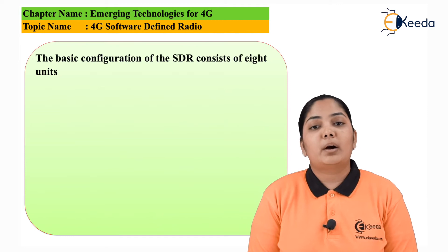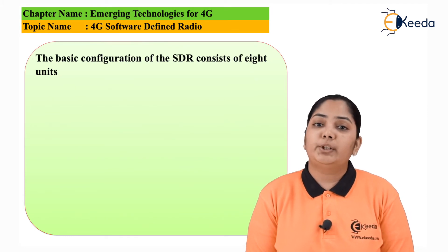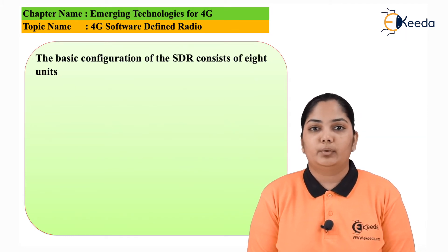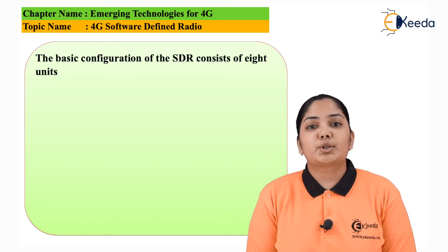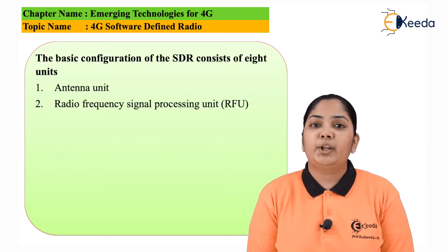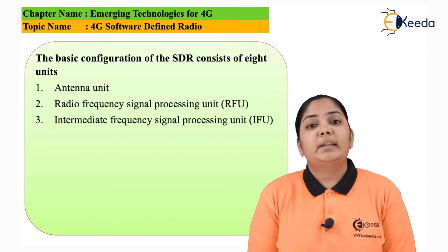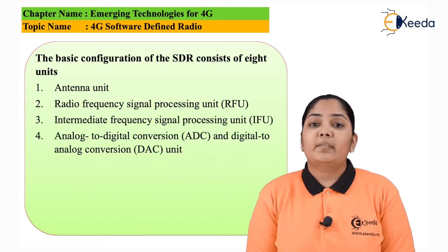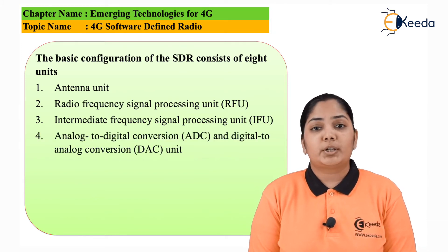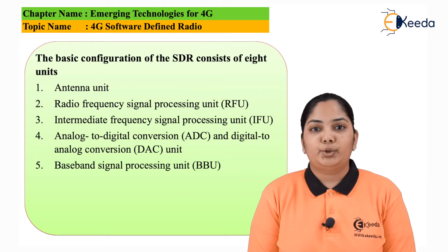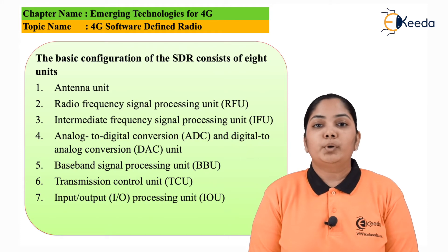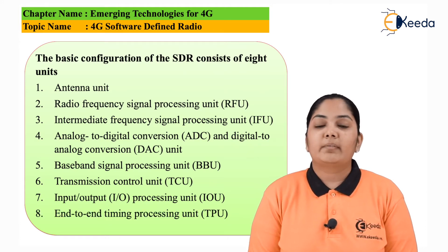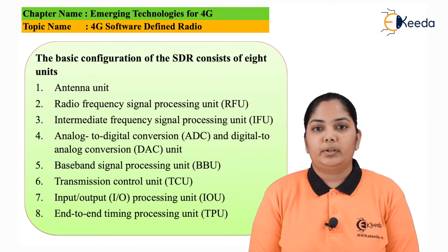Let us now look at how the software defined radio looks and what are the units of this software defined radio. There are multiple units which together form the software defined radio: the antenna, the radio frequency unit, the intermediate frequency unit, an analog to digital and digital to analog converter, the baseband unit, transmission control unit, input-output processing unit, and finally the end-to-end timing control unit. All these units together form the software defined radio.